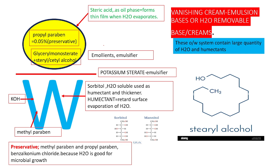The topic is vanishing cream, or emulsion-based or water-removable bases. When water is the continuous phase, we need to add more amount of humectants in order to prevent the loss of water from the formulation.